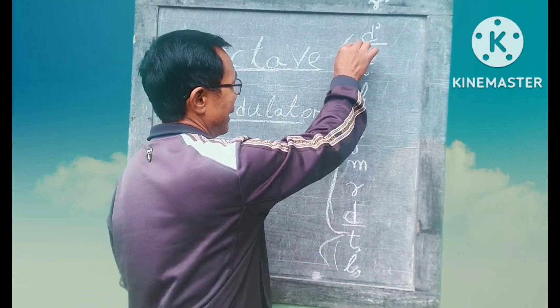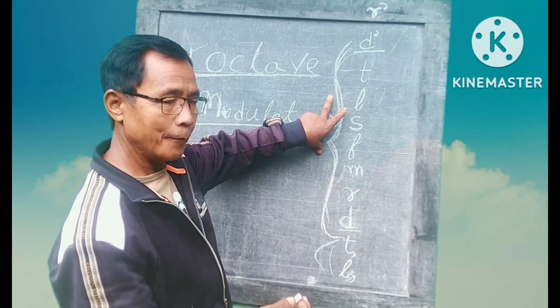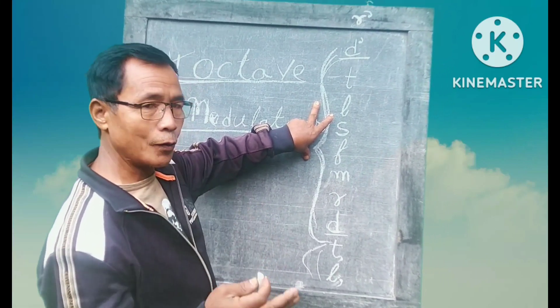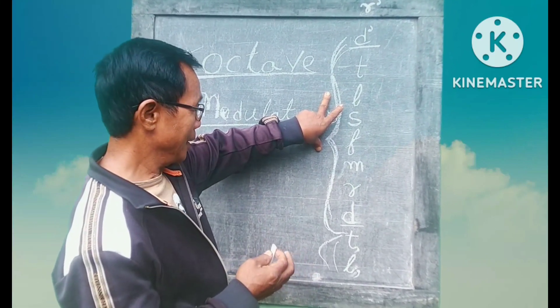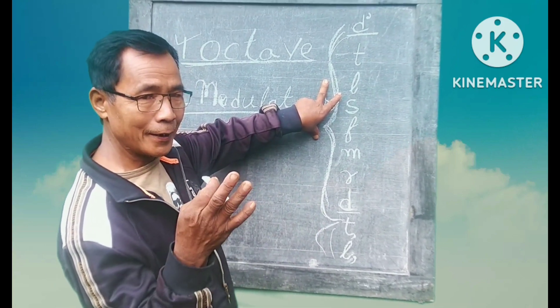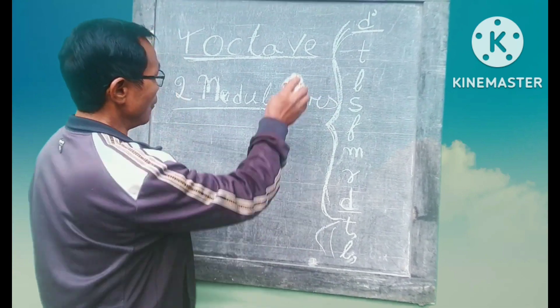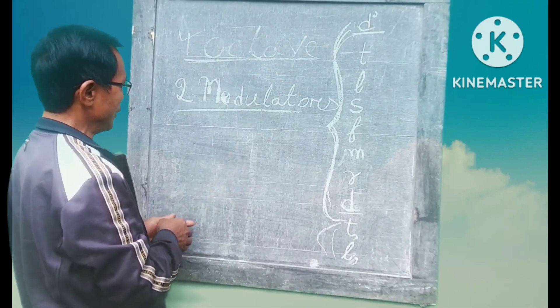The octave is the most important part. The octave is the most important part of the octave. This is the modulator.